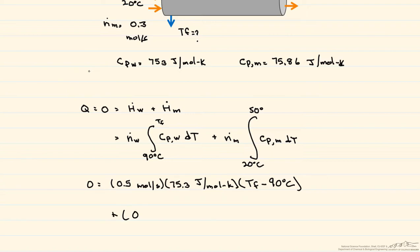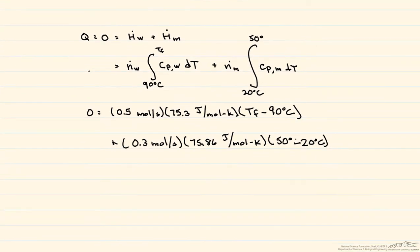And we add to that our flow rate, 0.3 moles per second of the methanol, times 75.86 joules per mole Kelvin, and now our delta T here is 50 degrees minus 20 degrees C. And so if we do the calculation, we find that the final temperature of the water is equal to 72 degrees C.